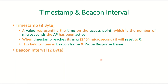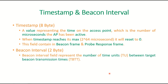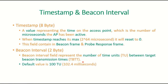The beacon interval field is 2 bytes. It represents the number of time units between TBTs — Target Beacon Times. We already discussed that the default value of the beacon interval is 100 TU, which equals 102.4 milliseconds.